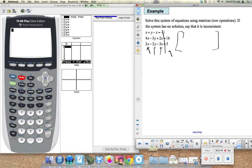So we have 1, 1, negative 1, negative 1, 4, negative 3, 2, 16, and then 2, negative 2, negative 3, 5.